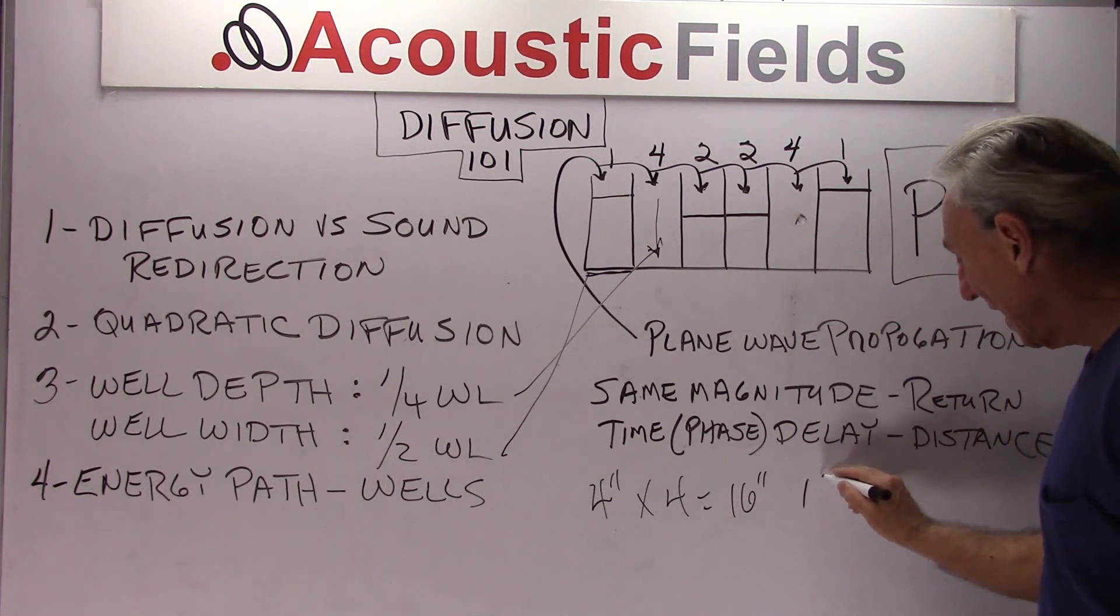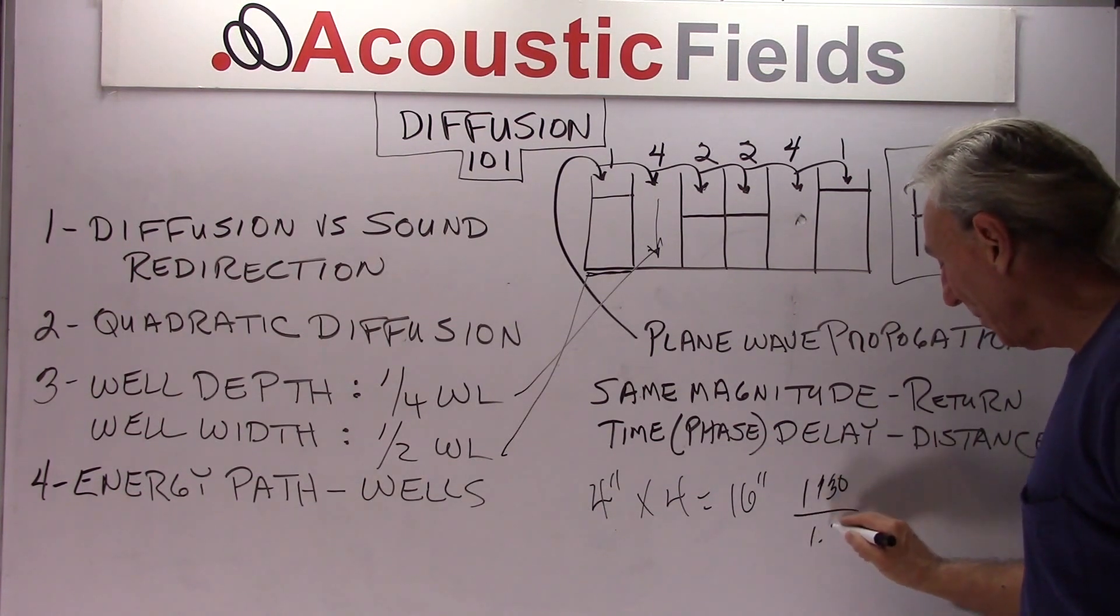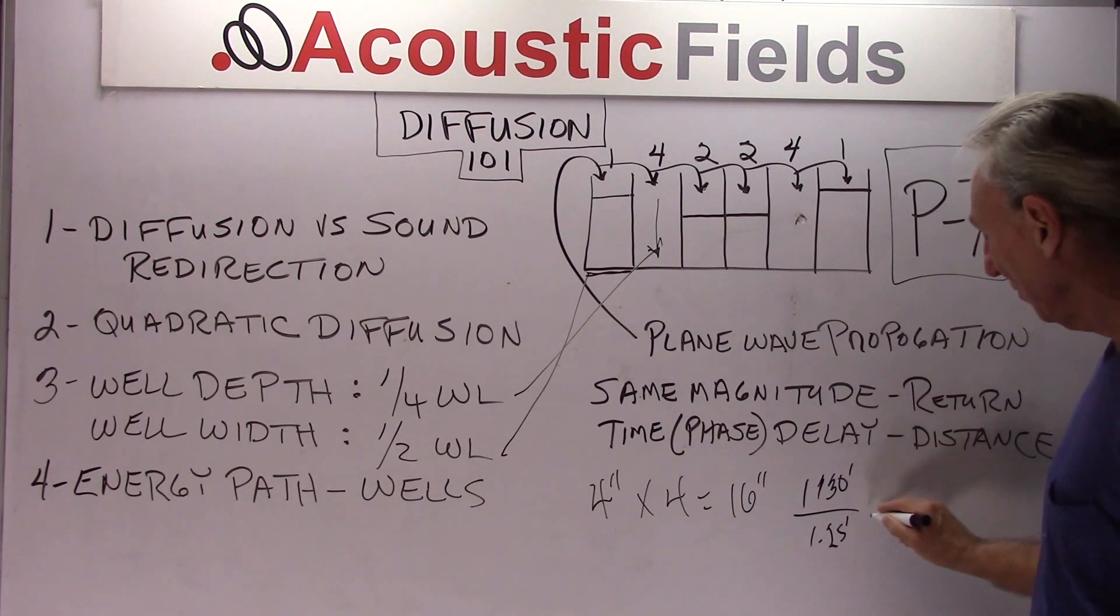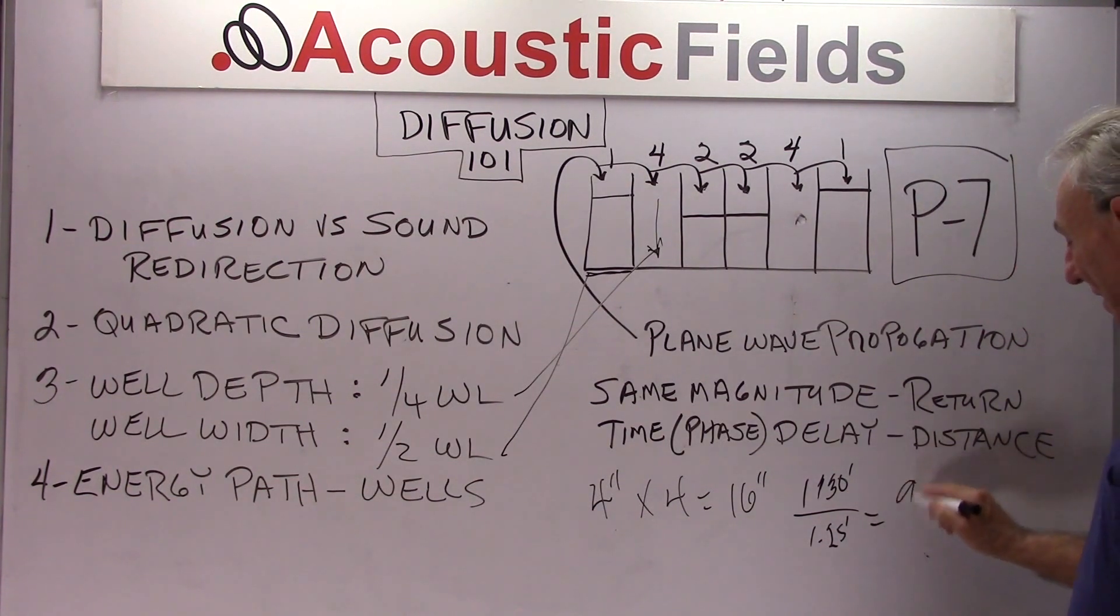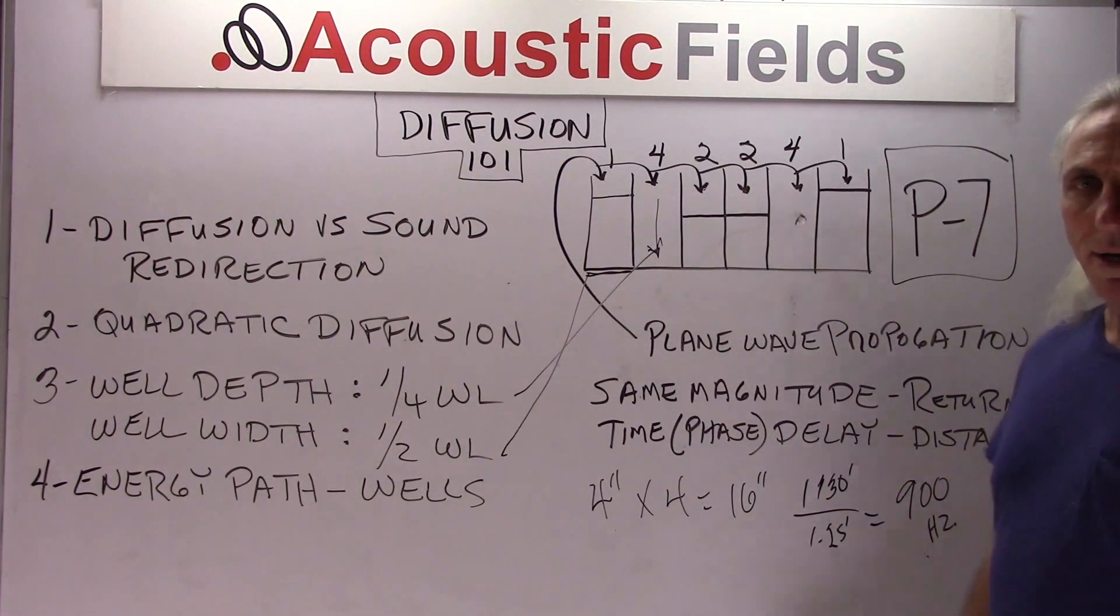1130 and we divide it by 1.25 feet because they're both in feet. You're going to get what, about 900? So this four inch depth represents about 900 cycles.